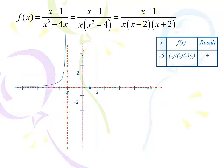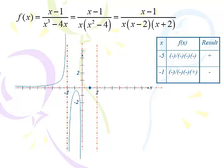Looking at the factored form, we have four factors: (x-1), x, (x-2), and (x+2). For region 1, pick x equals negative 5: we get negative, negative, negative, negative — four negatives is positive. So all points left of negative 2 are positive — we're above, heading up. For region 2, pick x equals negative 1: negative, negative, negative, positive — three negatives and one positive is negative. So it's some parabolic-type curve in there; I'm not sure of the turning point without calculus.